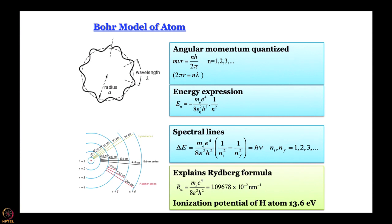That is the strength of Bohr theory - that we have this experimentally observed quantity, which is so precise, and Bohr theory can give you that value to the last decimal place. Also, one can work out the ionization potential for the hydrogen atom, and the experimental value of 13.6 electron volts is reproduced very nicely using Bohr theory. The problem with Bohr theory is that it does not work beyond the hydrogen atom.